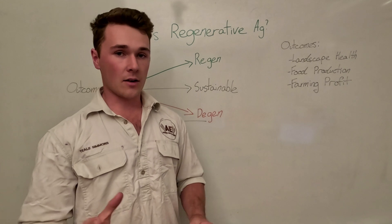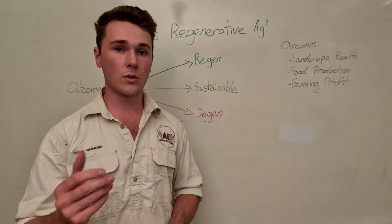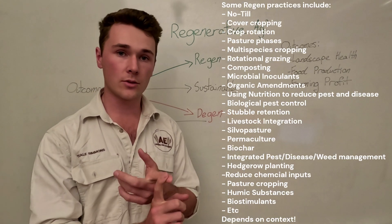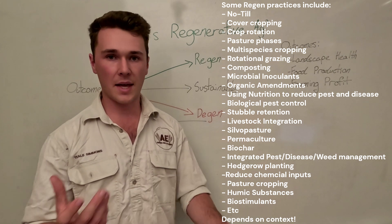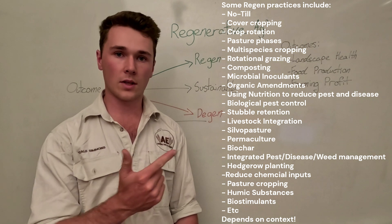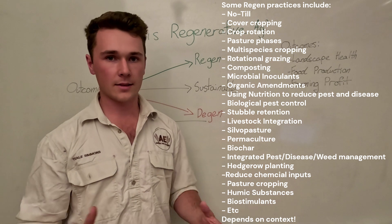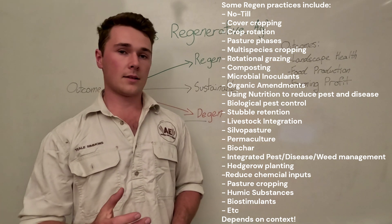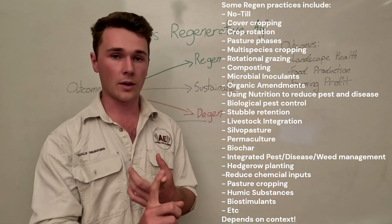If you're new to regenerative agriculture and clicked on this video to learn about some practices you could look into: things like no-till — going to no-tillage or reduced tillage. Even with that there's nuance and it depends on your context. For example, whether you'd rather terminate a cover crop with tillage versus spraying it out, and the trade-offs between them — it's very complex, which is why it's so hard to define. But in a general sense, going no-till is very beneficial for soil health.